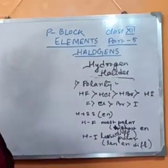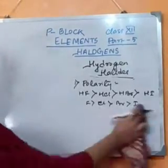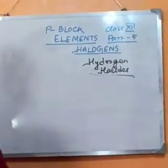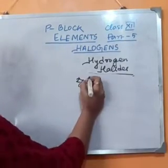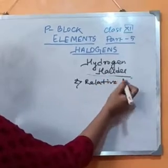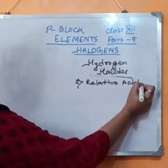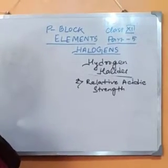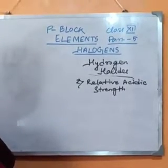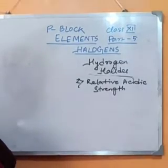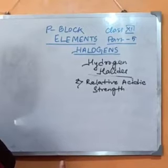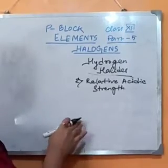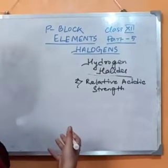Next, I will come to the acid character — the relative acidic strength. This is another important character. You all might think that more the polarity of a bond, the greater the acid character of that molecule. But let me show what happens in the case of hydrogen halides and how they show their acidic character.